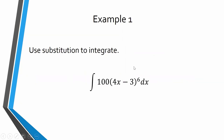The steps of substitution are hard to write down, so instead I'm going to focus on lots of examples. Let's take a look at this one: use substitution to integrate 100 times the quantity (4x - 3) raised to the sixth power with respect to x. The first thing we do is identify the inside function — here it's clearly 4x - 3, since that polynomial is being raised to a high exponent.